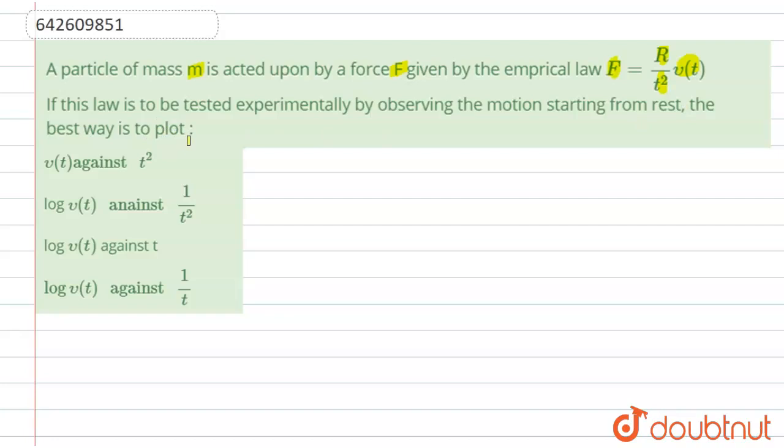So in this question, I have to draw a graph between V of T function against T. Now we have given a particle of mass M acted by a force F. We can write this function F as R upon T square function V of T. Now we know,